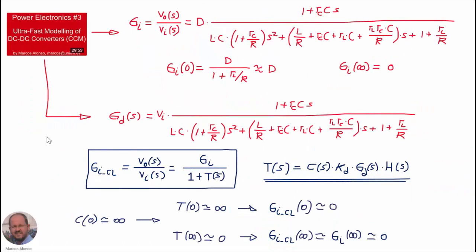In order to obtain the audio susceptibility in closed loop we need to calculate the loop gain of our converter. In previous video Power Electronics number 3, we have seen how to model the buck converter in continuous conduction mode. We obtained the audio susceptibility in open loop and also the control-to-output transfer function, and with these we have everything to get the loop gain and then to obtain the audio susceptibility in closed loop at two important points: zero frequency and infinite frequency.